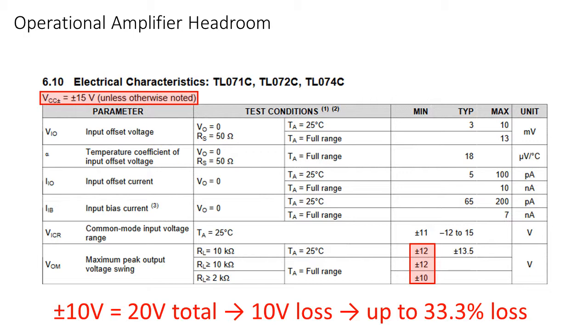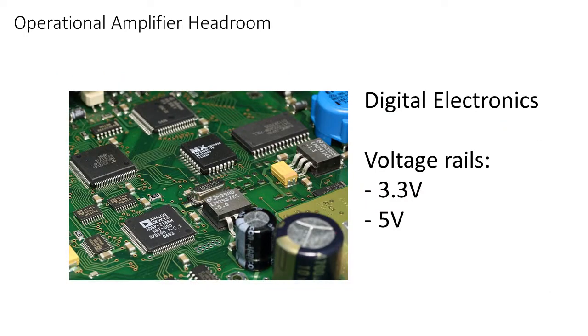This might not be much of a problem when supplying the op-amp with such big power supply rails, but you will come across projects where these rails aren't available. When you work with digital electronics, you only have 5V or 3.3V available.